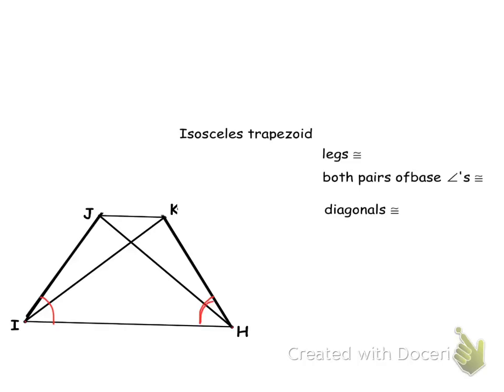So basically what you need to remember from the isosceles trapezoids are just simply these characteristics or these properties right here. So the legs are congruent, both pairs of base angles are congruent, and the diagonals are congruent. Notice they're not bisectors. So make sure you understand that these little segments are not congruent to one another. They're not bisecting each other, nor are these perpendicular. We're not talking about a rhombus or anything like that, not in this one.